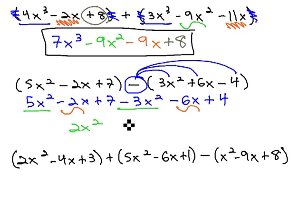Negative 2x minus 6x is negative 8x. And finally, 7 plus 4 is positive 11, and we have our solution.